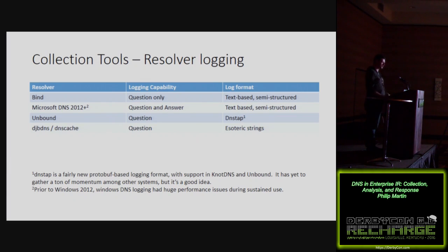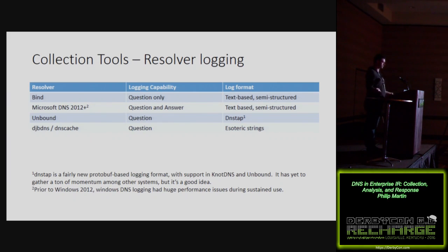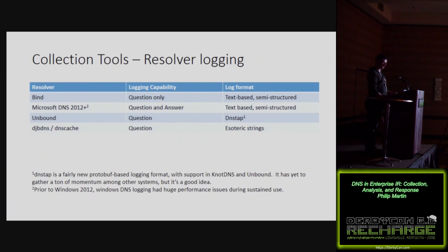There's a DNS logging protocol based on Protocol Buffers called dnstap, which only exists right now in NSD and Unbound, but they want to spread it further. It offers very efficient on-the-wire transmission. Hopefully this moves into resolvers globally. Notably, nothing else logs the answer, which is an important part of what we're trying to get. Commercial products like Infoblox do a good job of logging DNS, and I've heard PowerDNS can do this as well.